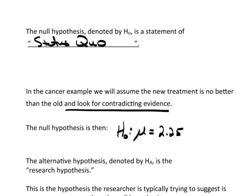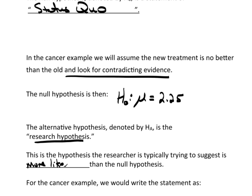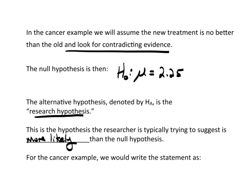The alternative hypothesis, which we denote by H sub A, is what we think of as the research hypothesis. This is the hypothesis that a researcher is typically trying to suggest is more likely than the null hypothesis. So for the cancer research, we write: H-A, the alternative hypothesis, is that the true mean is greater than 2.25.